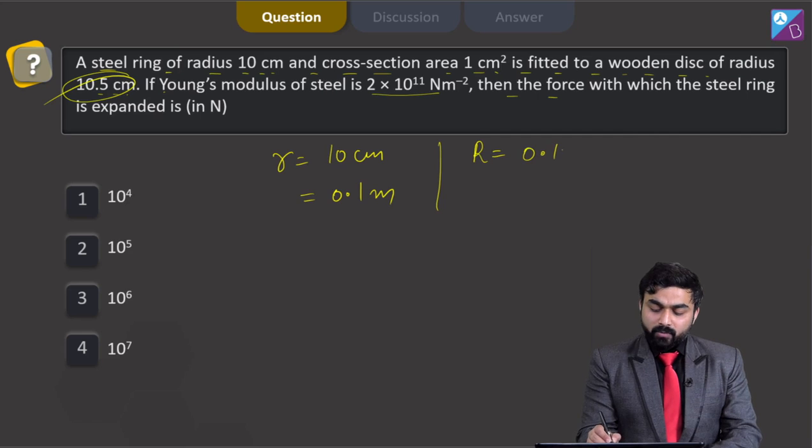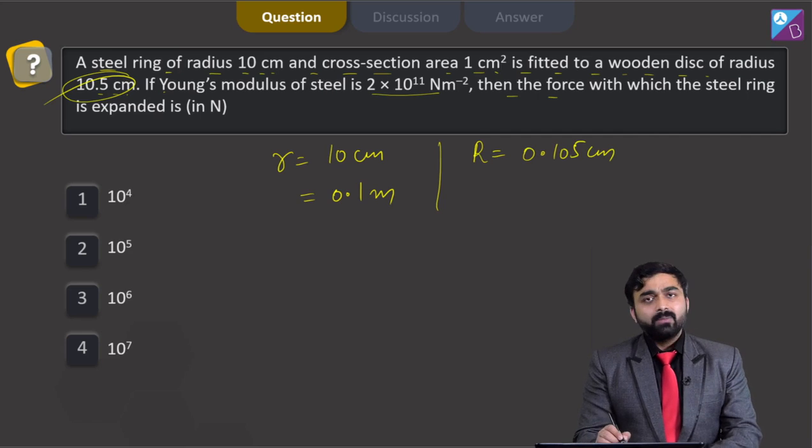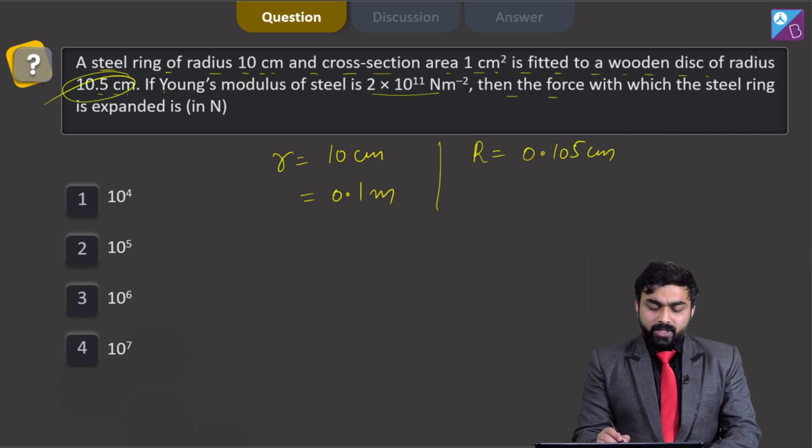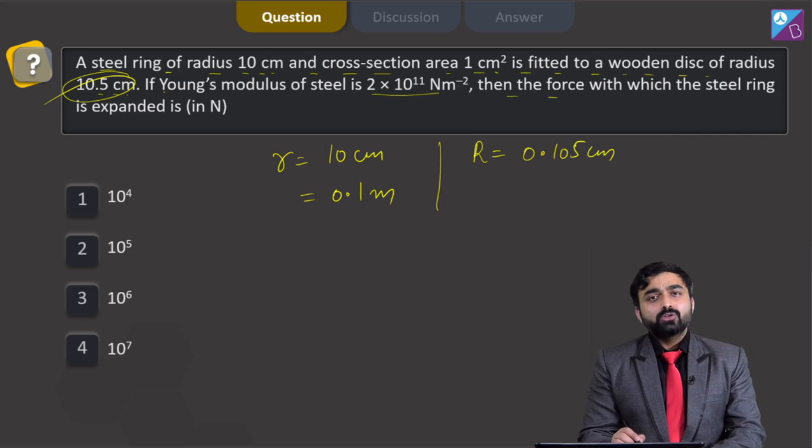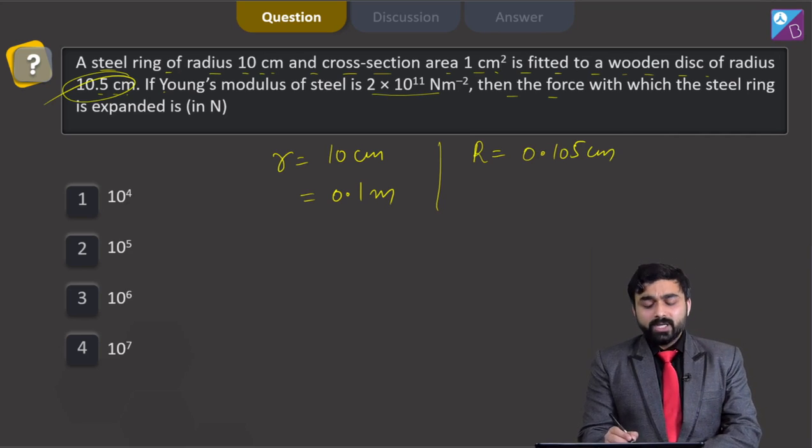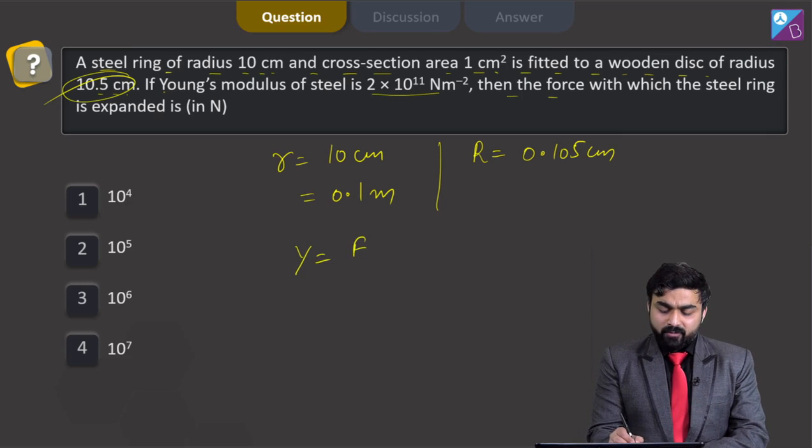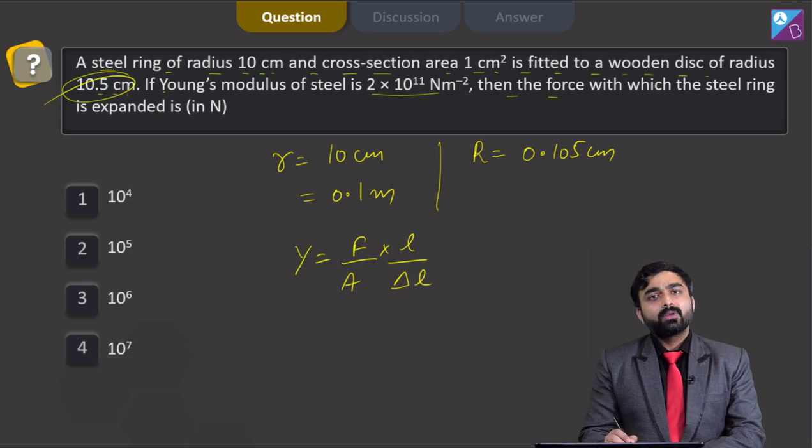So, this will be 0.105 centimeter. Young modulus is also given to me. Now students, Young modulus can be written as F by A into L over delta L.